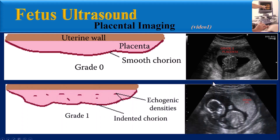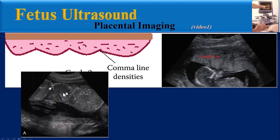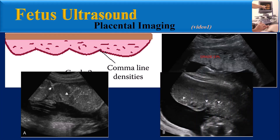Grade 1 shows occasional hypo- or hyperechoic areas, seen at the late second trimester. In grade 2, larger indentations along the chorionic plate and larger calcifications in a dot-dash configuration along the basal plate can be seen, found at the early third trimester. This image shows a normal placenta at 35 weeks gestation with calcification in a dot-and-dash configuration outlining the cotyledons. An image at 25 weeks in a patient with preeclampsia shows premature calcification in a linear pattern suggestive of vascular territory distribution.